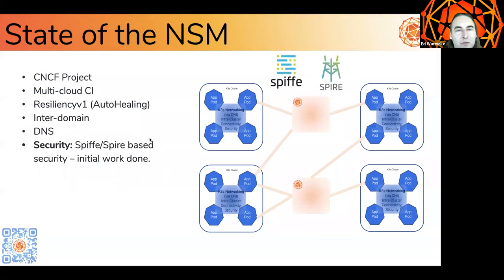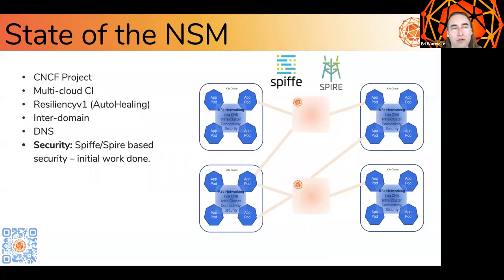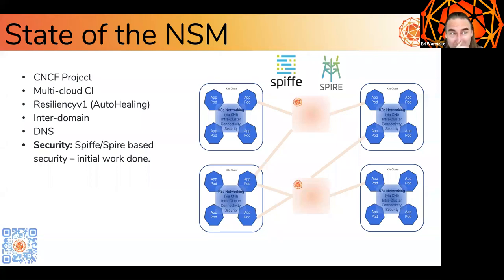On security: one of the things people should be asking is how do I know a workload should be allowed to connect to a connectivity domain? We're collaborating closely with the Spiffe and Spire project. They've done a brilliant job of issuing authenticatable identities so that when your workload comes up and says it wants to connect to your database replication domain, you can actually know who that workload is at a semantic level, authoritatively. This allows you to make fine-grained policy decisions instead of configuring firewall rules with IPs — which is a really hard problem given that pods come and go and IPs shift all the time.